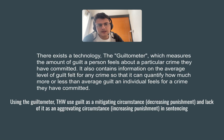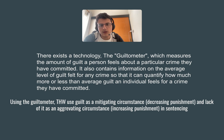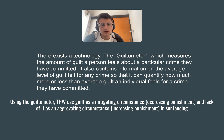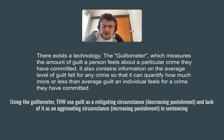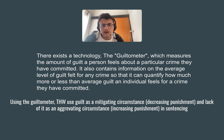The motion is basically: info slide — there exists a technology, the guiltometer, which measures the amount of guilt a person feels about a particular crime they have committed. It also contains information on the average guilt level for any crime, so it can quantify how much more or less than average guilt an individual feels. The motion is: this house would use guilt as a mitigating circumstance decreasing punishment, and a lack of it as an aggravating circumstance increasing punishment in sentencing.